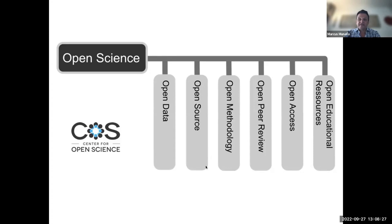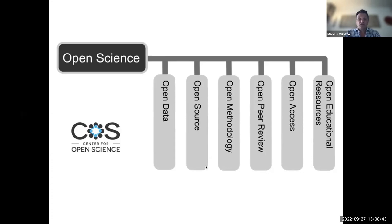Essentially, open research is that process of making the research workflow transparent and making those intermediate research artefacts available for scrutiny and available for reuse in a way that hopefully serves to improve quality — although there are other benefits too, such as the potential for reuse of elements of that research process.